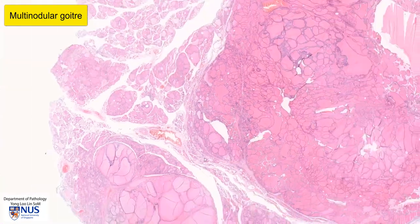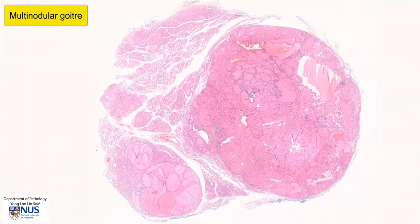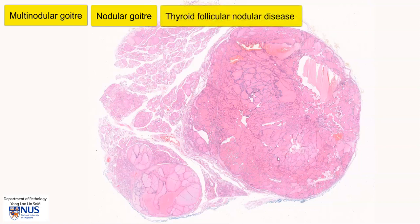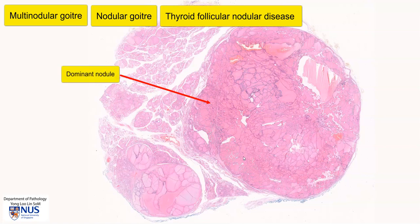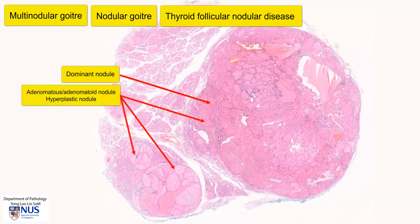There are several synonyms for this condition. They include nodular goiter, multinodular goiter, and thyroid follicular nodular disease. If we are referring to the individual nodules, we sometimes refer to them as dominant nodules — for example, the largest nodule within the nodular goiter. We may also use terms such as adenomatous, adenomatoid, or hyperplastic nodules.